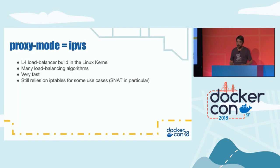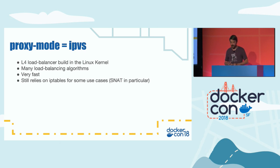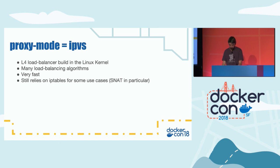IPVS is a layer 4 load balancer built into the kernel, available since Linux 2.6. It comes with many load balancing algorithms, is very fast, and relies on IP tables only in some edge cases. IPVS is much faster than IP tables because it was designed to do load balancing.